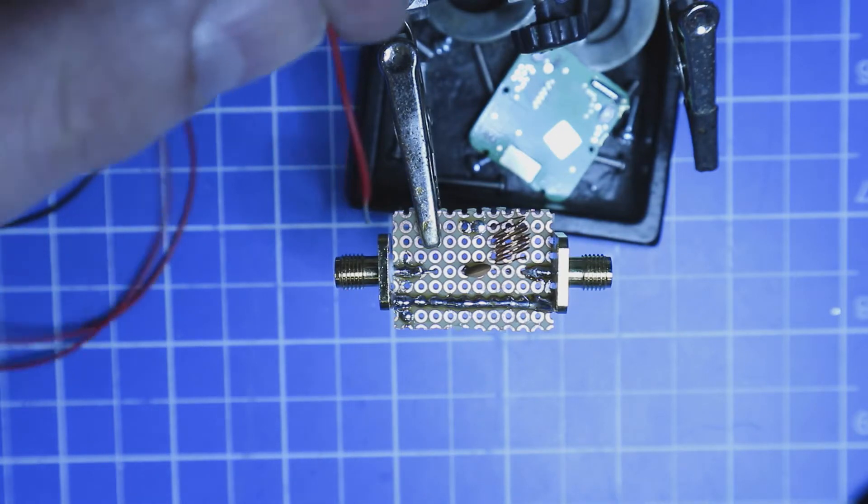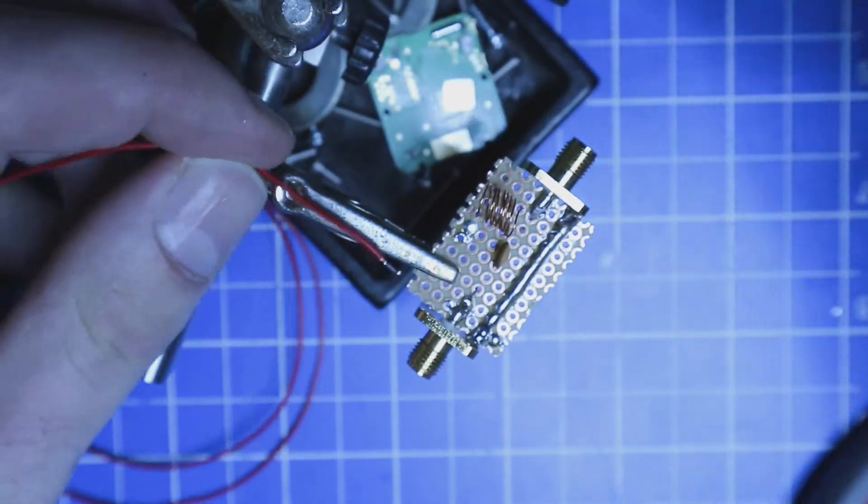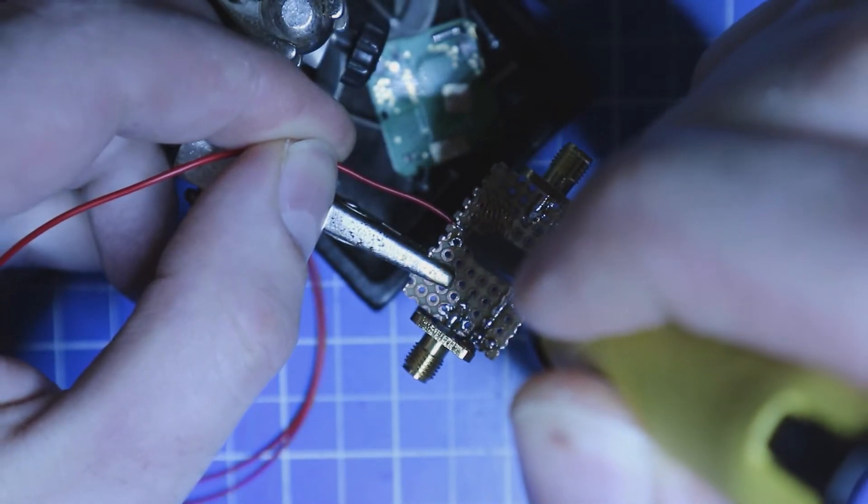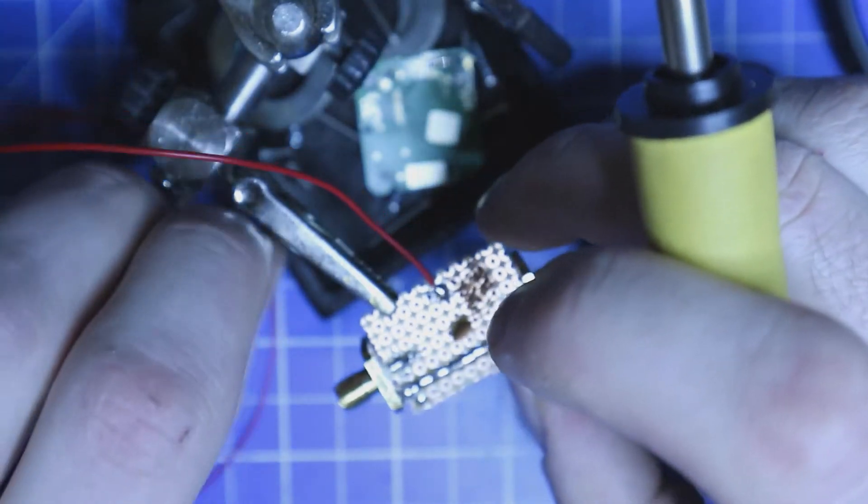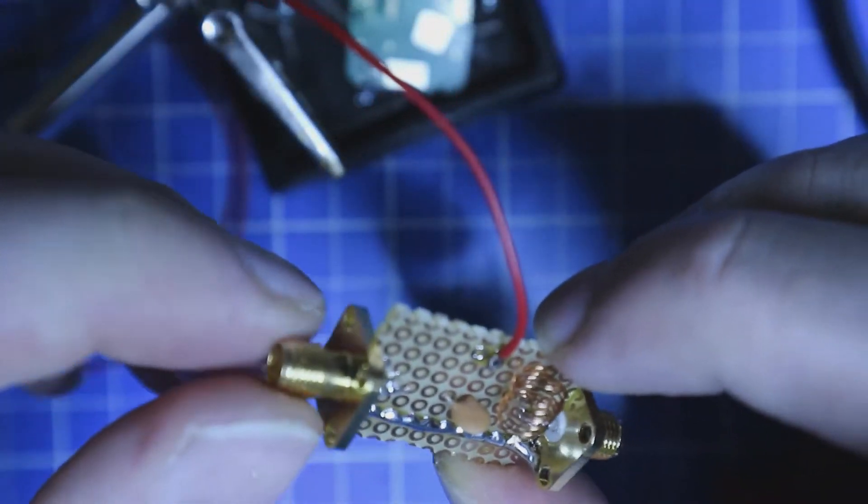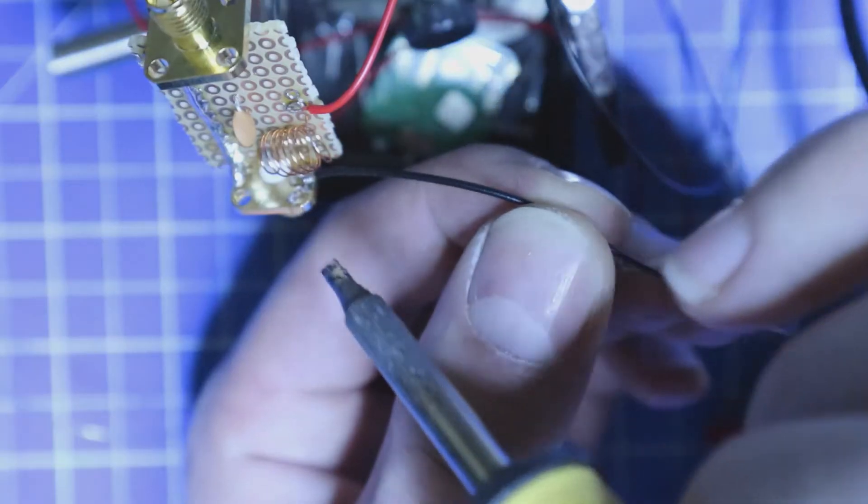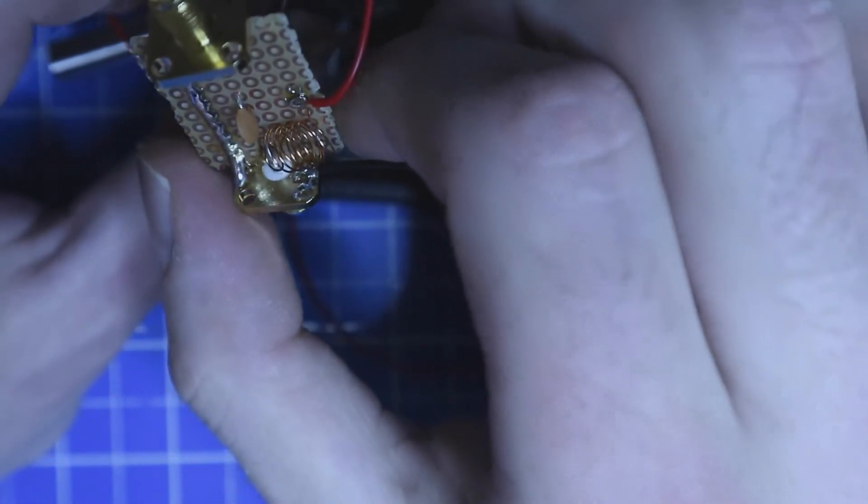So I'm going to solder the cables here and the plus cable will be soldered to the coil. And the negative side of the cable will be soldered to the connector. Okay, now we are basically finished.